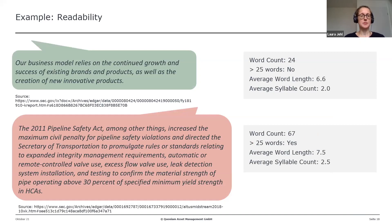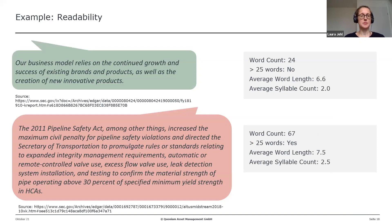For readability, I found examples from business descriptions in different annual reports. In the top example we have 24 words in the sentence, which doesn't pass our threshold for a long sentence — which is 25 words — with an average word length of 6.6 and a syllable count of 2.0. In the bottom example we see a much longer sentence of 67 words, with an increased average word length and syllable count, all pointing to a lower readability score.